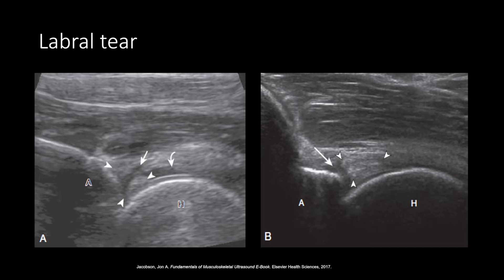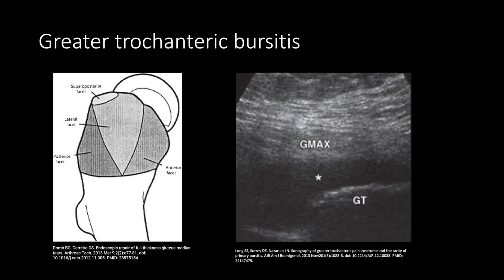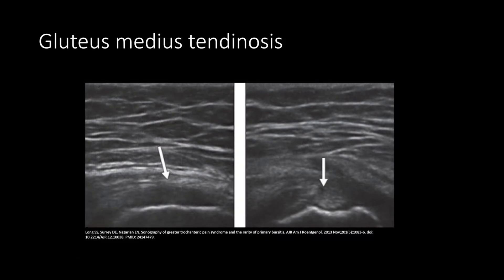The right image shows detachment, denoted by the white arrow, of the labrum, denoted by the arrowheads. Here we have some fluid between the posterior facet of the greater trochanter and the gluteus maximus muscle, suggestive of greater trochanteric bursitis. Ultrasound images of the lateral facet of the greater trochanter show a thick and hypoechoic gluteus medius tendon with loss of the normal fibrillar pattern, consistent with gluteus medius tendinosis.